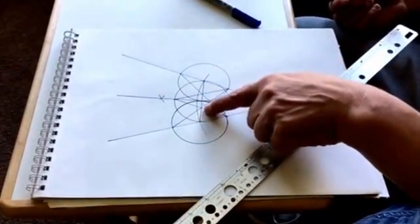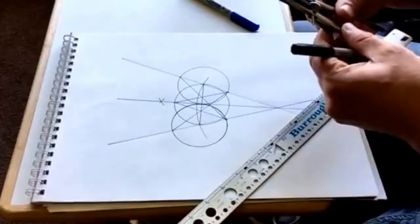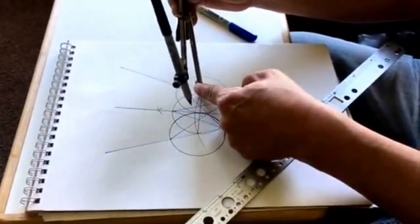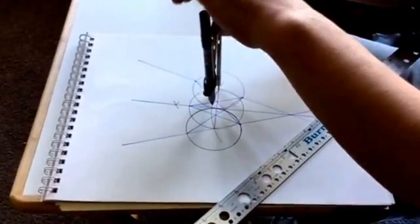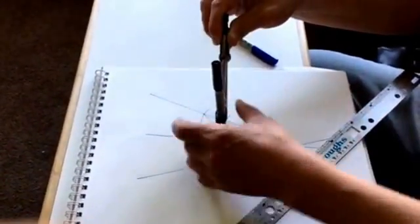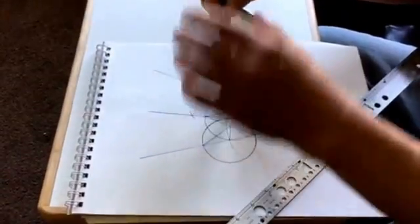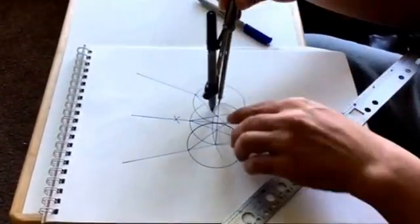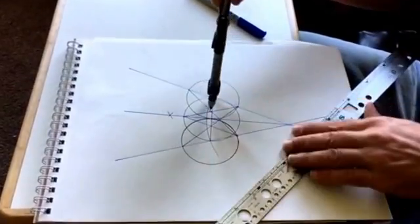But now you want to transduce that trisection to the arc of degrees. And to do that, let me set this to the point where these two intersect.